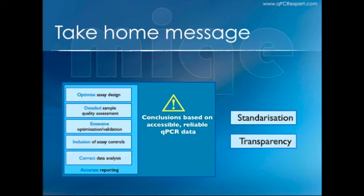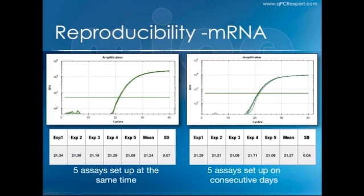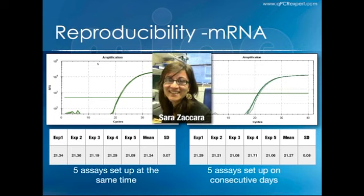It is actually fairly straightforward to produce good qPCR and RT-qPCR data, as shown by this experiment. On the left-hand side, you can see an experiment where a student set up five different experiments simultaneously and they're very tight in terms of results. On the right, the same assay was set up on five consecutive days and run on an instrument after five days, again showing very similar results. So if your assay is properly optimized and if you have green fingers, you can get reliable results.